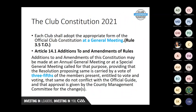Rule 3.5 of the official guide states that each club should adopt the appropriate form of the official constitution at the general meeting. The club constitution hadn't been updated for a number of years, and at Congress 2021, following a long consultation process with all units of the association, changes were made. Previously, both were referred to as 'rules' — now they are no longer referred to as rules of the club constitution. They are now articles of the club constitution.